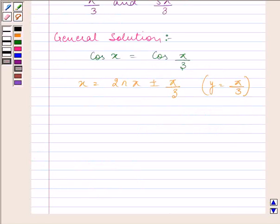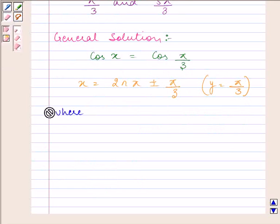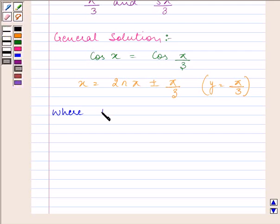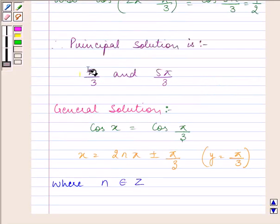And do remember that here, n belongs to the set of integers. So the principal solution comes out to be π by 3 and 5π by 3.